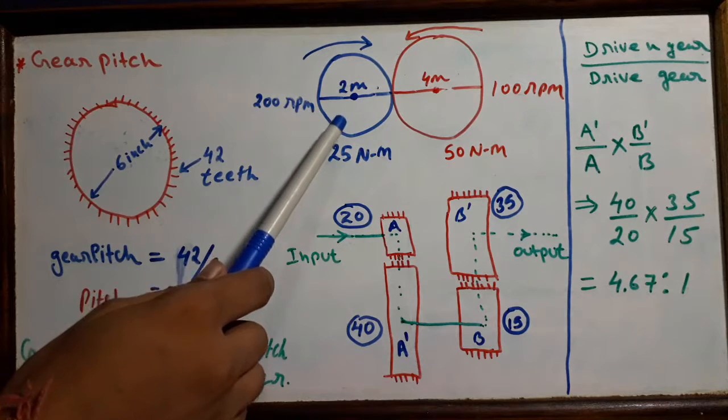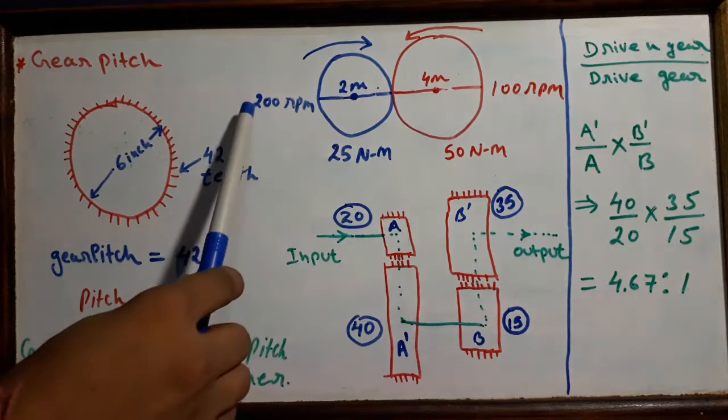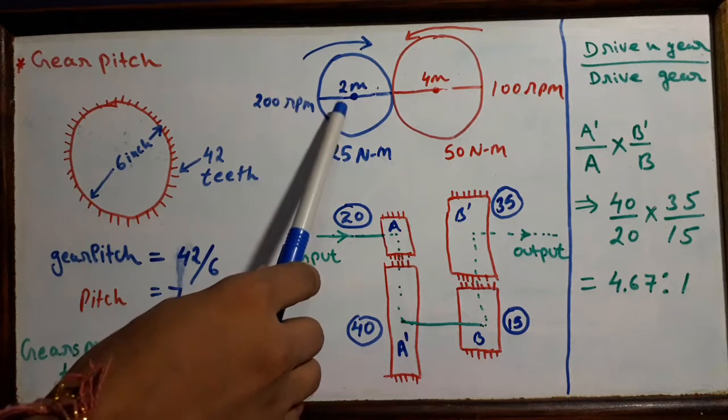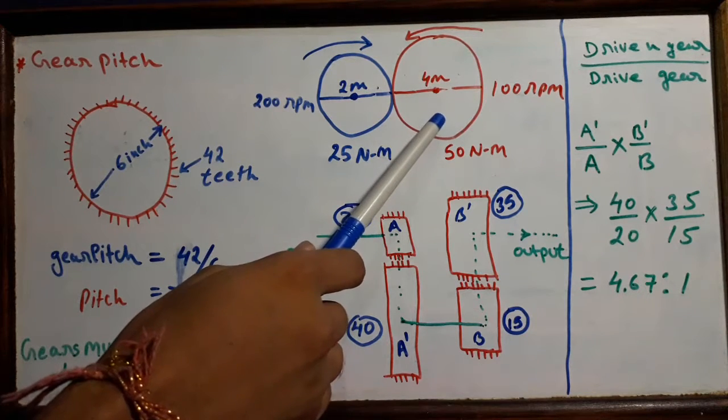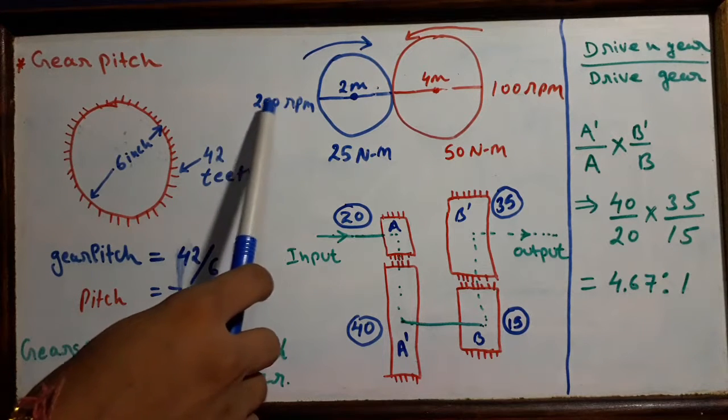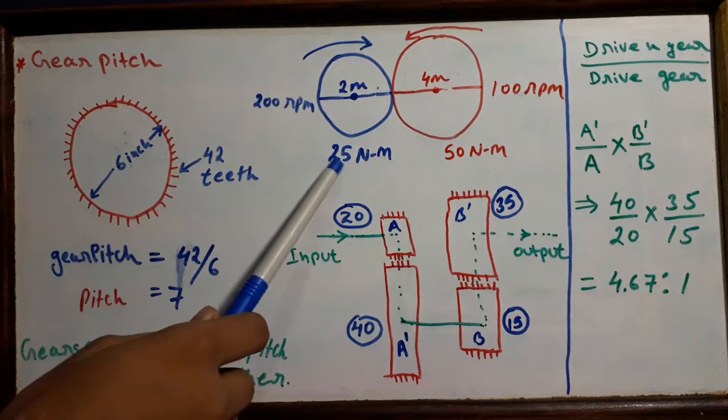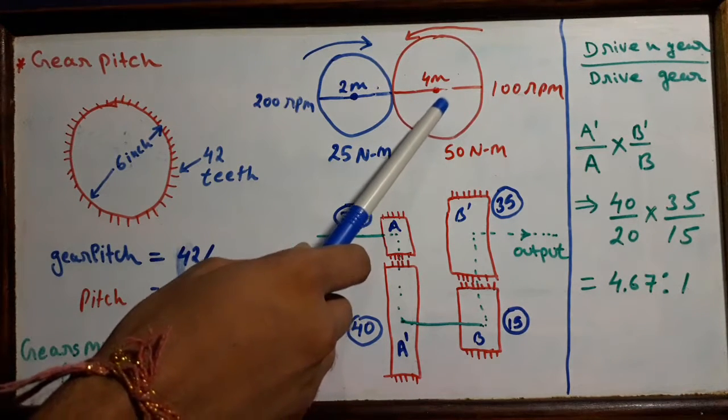This is our drive gear and this is driven gear. We have 2 meter diameter of this drive gear and 4 meter diameter of driven gear. We will notice that this drive gear is rotating at 200 RPM, which generates a torque of 25 Newton meter, while the driven gear having 4 meter diameter is rotating at 100 RPM.